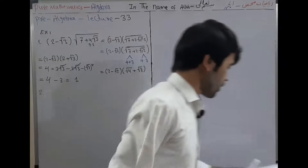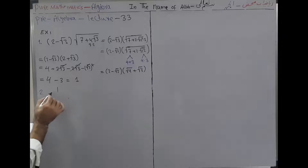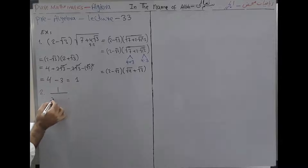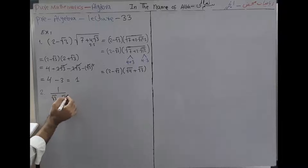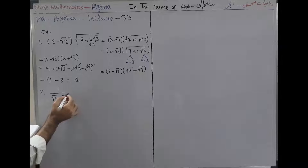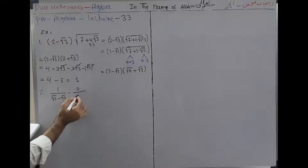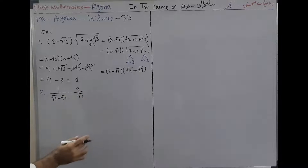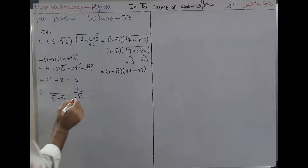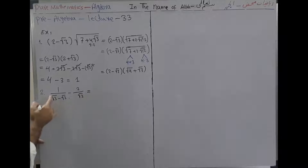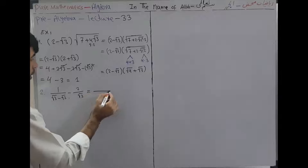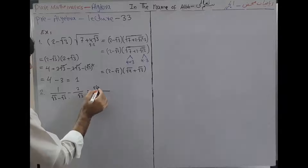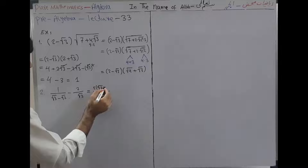Question 2: we have 1/(√3 - √2) minus 2/√2. We want to solve this. We rationalize the first fraction by multiplying numerator and denominator by (√3 + √2), getting 1·(√3 + √2) over (√3 - √2)(√3 + √2).